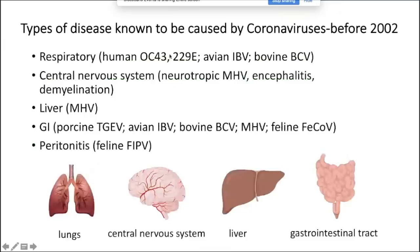Also before 2002, there were many types of diseases caused by coronaviruses. There are respiratory viruses—the human cold coronaviruses OC43 and 229E—as well as avian infectious bronchitis virus and bovine coronavirus. Central nervous system disease can be caused by neurotropic mouse hepatitis virus, a model for encephalitis and demyelination. Some MHV strains cause hepatitis. There are GI infections: porcine TGEV (transmissible gastroenteritis virus), avian virus, bovine virus, MHV, and feline coronavirus. Feline FIPV, a variant of feline coronavirus, can cause peritonitis.